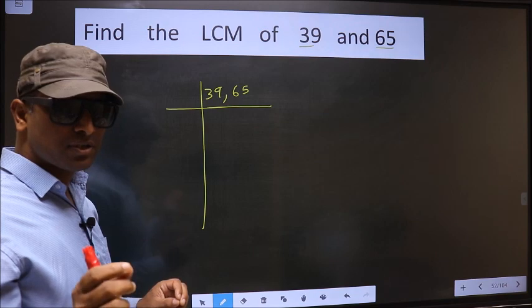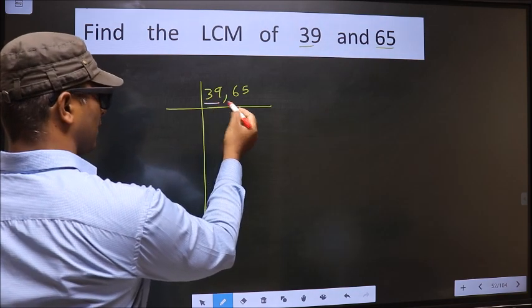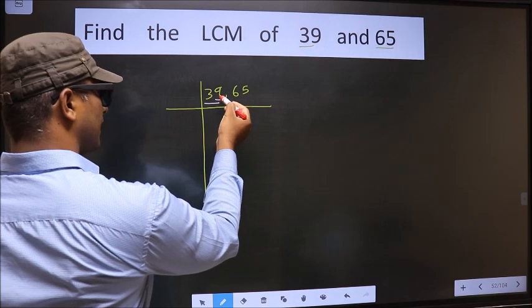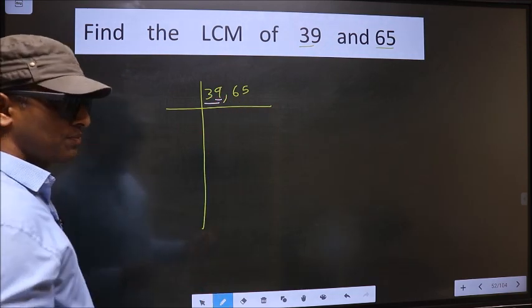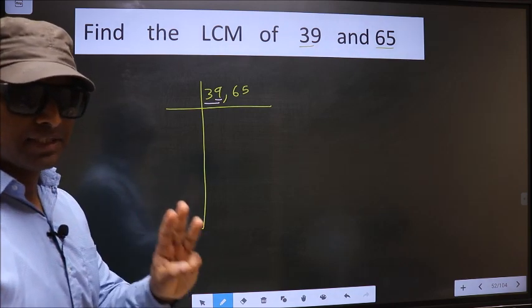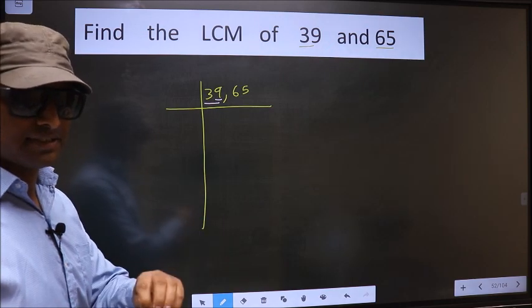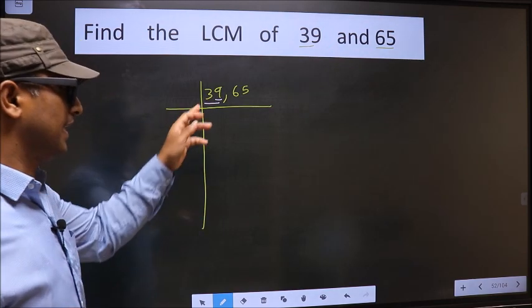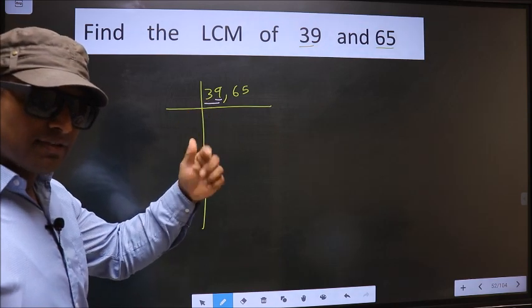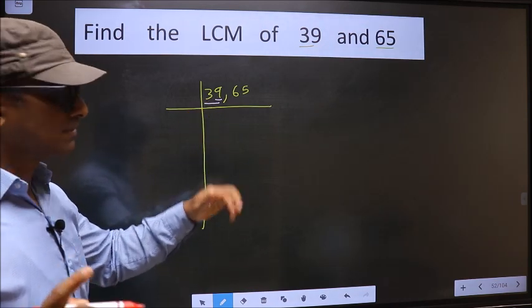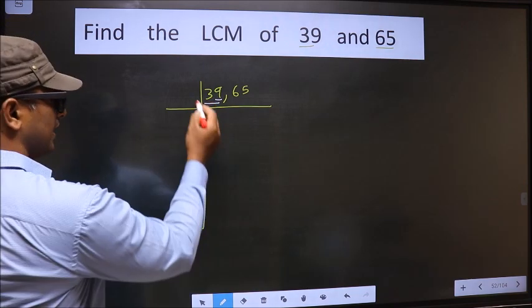Now we should focus on the first number, that is 39. Here last digit 9 is not even, so this number is not divisible by 2. Next prime number is 3. To check divisibility by 3, we should add the digits. That is 3 plus 9, 12. Is 12 divisible by 3? Yes. So this number is also divisible by 3. So we take 3 here.